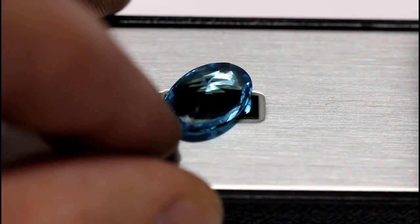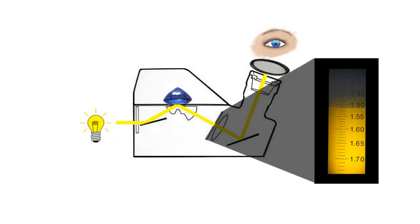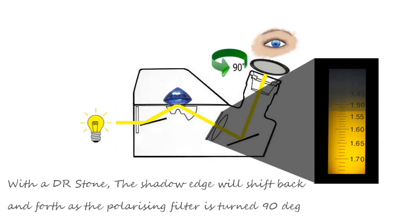So with a doubly refractive stone there will be quite a range of readings as we move the gemstone around. We then move this polarizing filter back and forth 90 degrees. This does a couple of things for us. Firstly, if the shadow edge shifts abruptly as we move this filter 90 degrees and back a few times it shows that it is indeed doubly refractive. If the shadow edge stays still it's singly refractive.